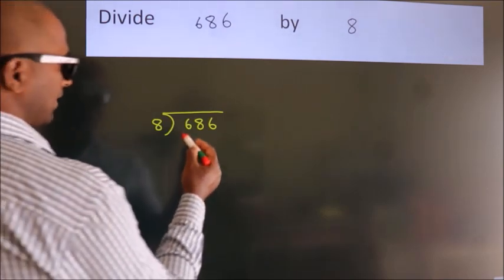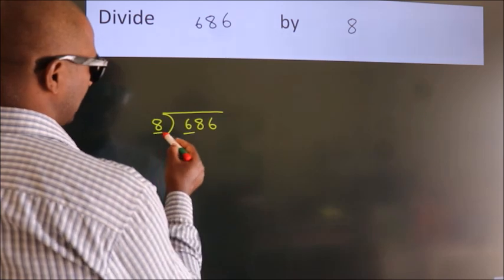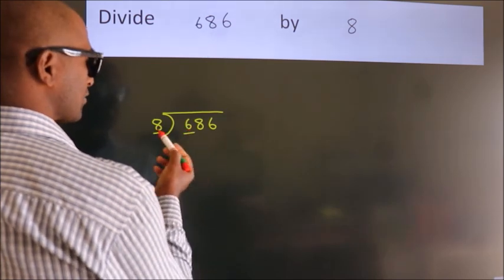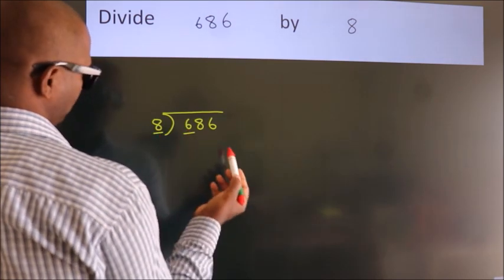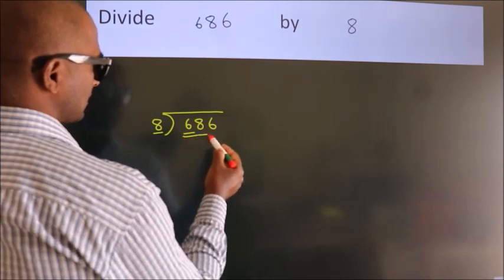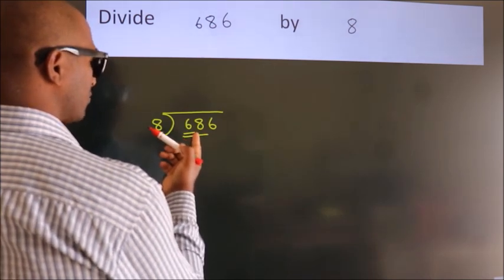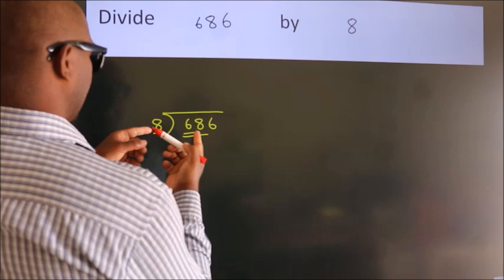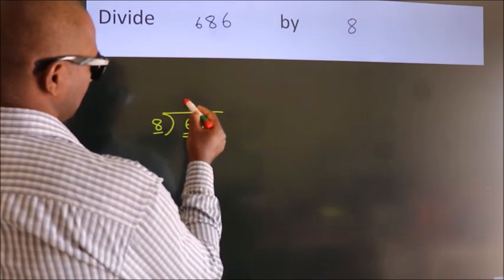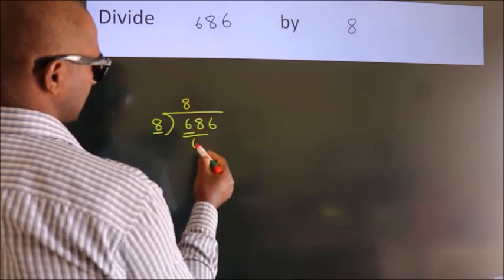6 is smaller than 8, so we should take 2 numbers, 68. A number close to 68 in the 8 table is 8 times 8, which is 64.